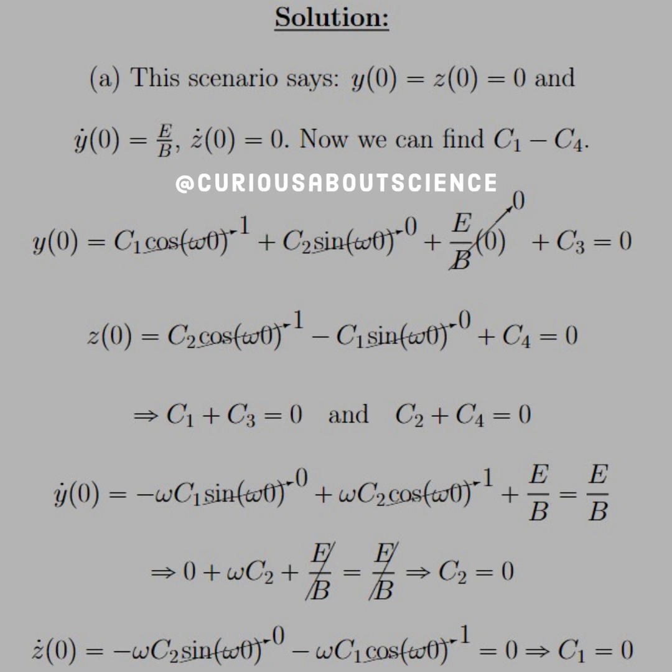Similarly, we can plug in 0 for the z equation and set it equal to 0, and we get the same cancellations with the sine and cosine, and we yield c2 plus c4 equals 0. Got that summarized below.